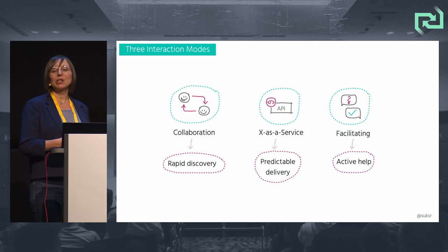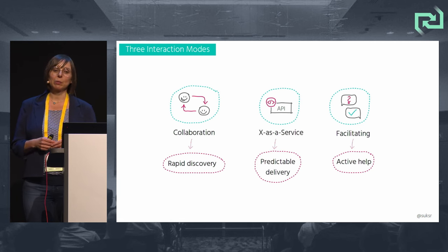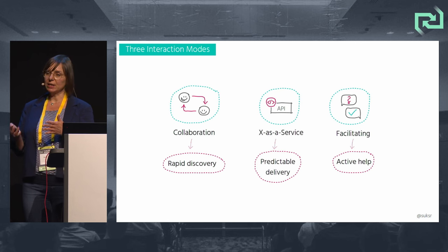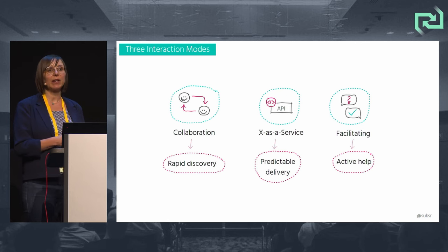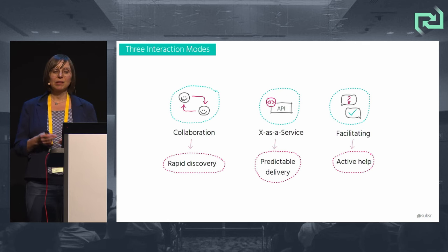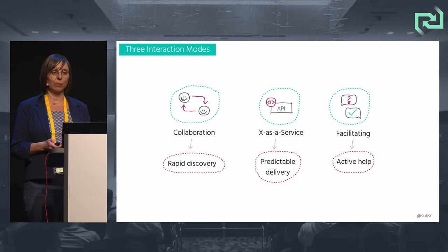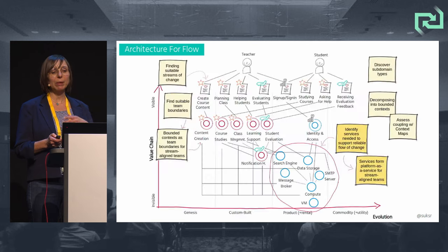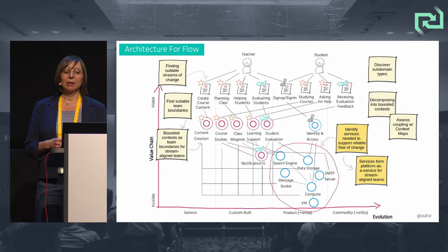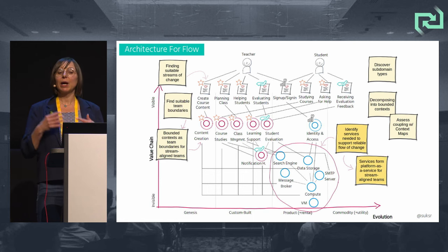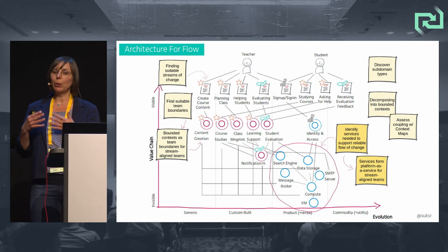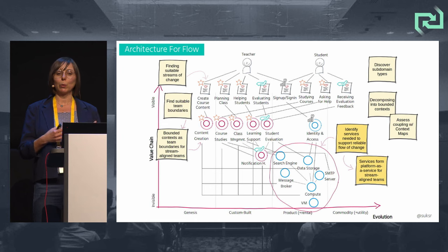Facilitation is the interaction mode that comes into play when one team would need active help from another team. This is the interaction mode typical for enabling teams. Coming back to our Wardley map again, stream-aligned teams rely on other teams supporting them in delivering their own work.